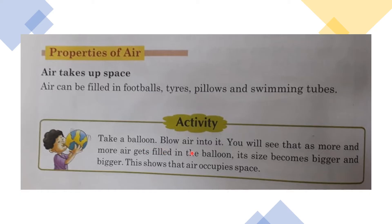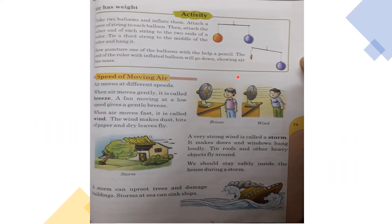The same goes for swimming tubes and life jackets — when you fill air in them, they blow up. That happens because air takes up space. Here's an activity: take a balloon and blow air into it. You will see that as more and more air gets filled in the balloon, its size becomes bigger and bigger. This shows that air occupies space.